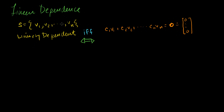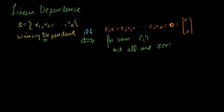So my set of vectors is linearly dependent — remember, I'm saying dependent, not independent — if and only if I can satisfy this equation for some ci's where not all of them are equal to zero. This is the key condition: not all are zero. Or you could say it the other way: at least one is non-zero.